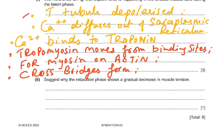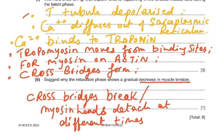For the relaxation phase showing a gradual decrease in muscle tension: cross bridges break and the myosin heads detach at different times, which is why there is a gradual rather than sudden decrease in tension. This is a 'suggest' question and somewhat more difficult; focus your time on the direct recall questions first.